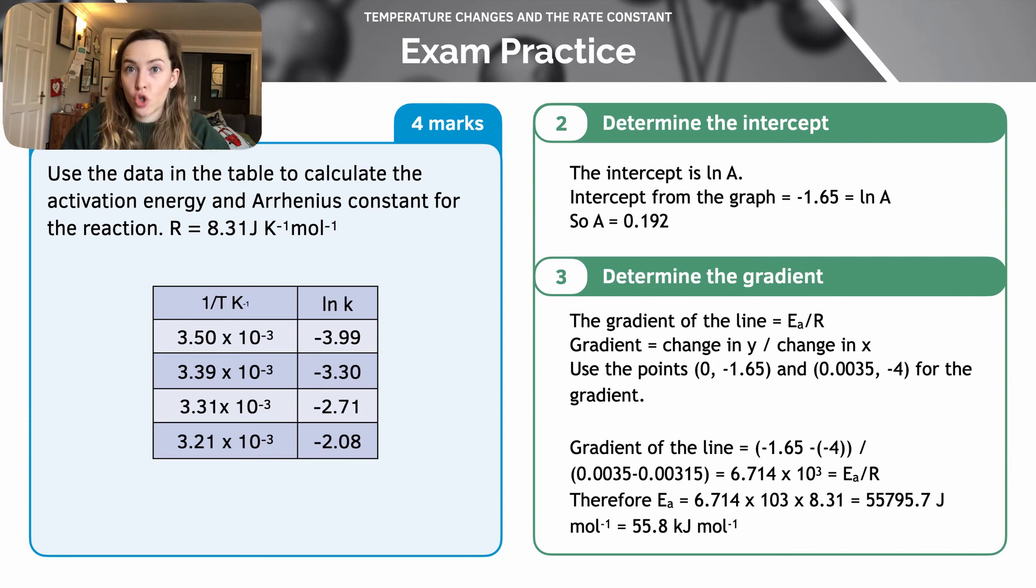We're going to use two points on the graph to calculate that. So let's use 0 and -1.65. So that's my y-intercept, of course. And then we'll use a point further along the graph: 0.0035 to -4. So let's calculate the gradient between those two points. So therefore, the gradient of the line is the difference between the first two values. So my values of y on the top, so the difference between those, divided by the difference between the two x values here. And that gives me a gradient of 6.714 times 10 to the 3.